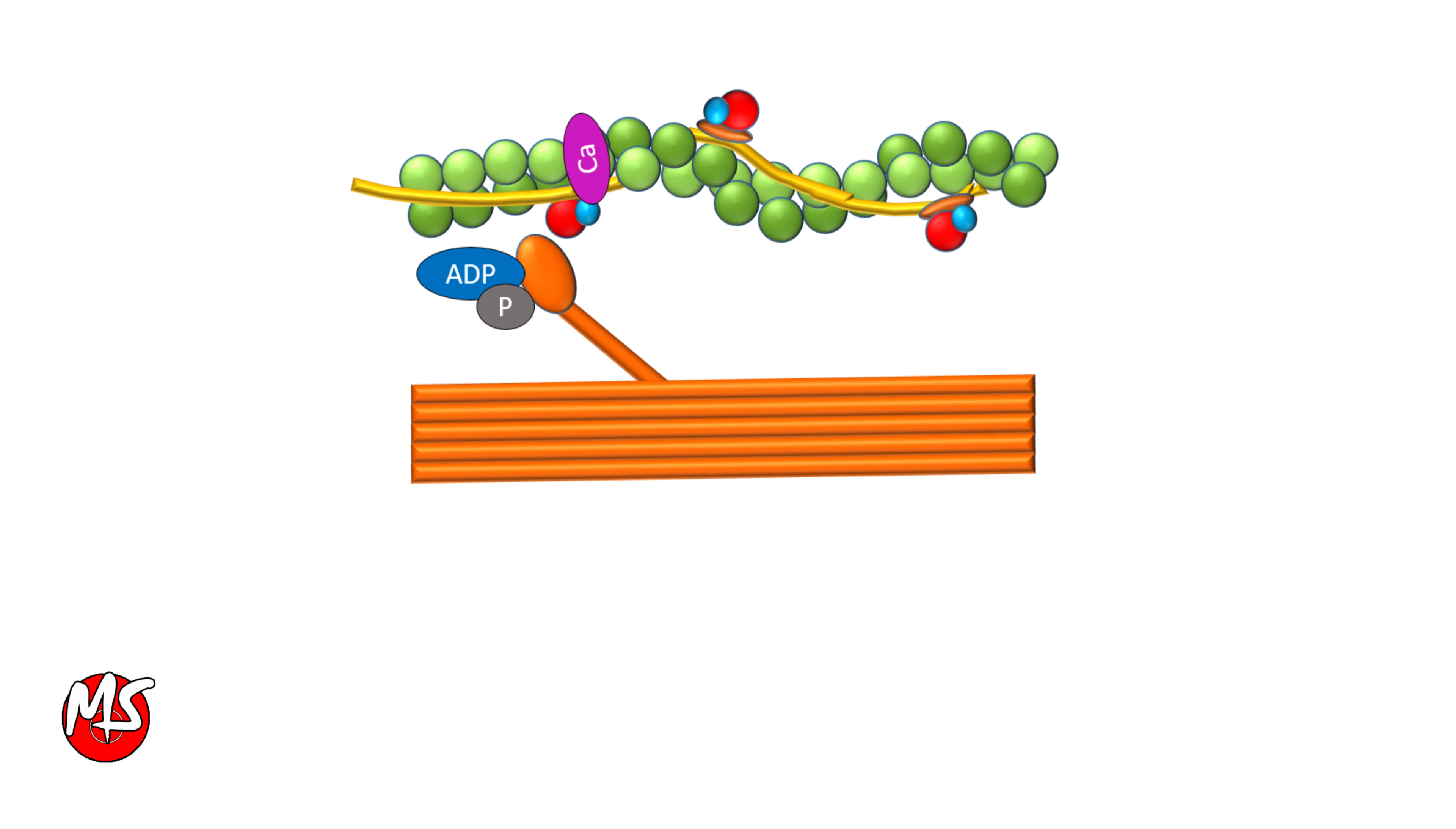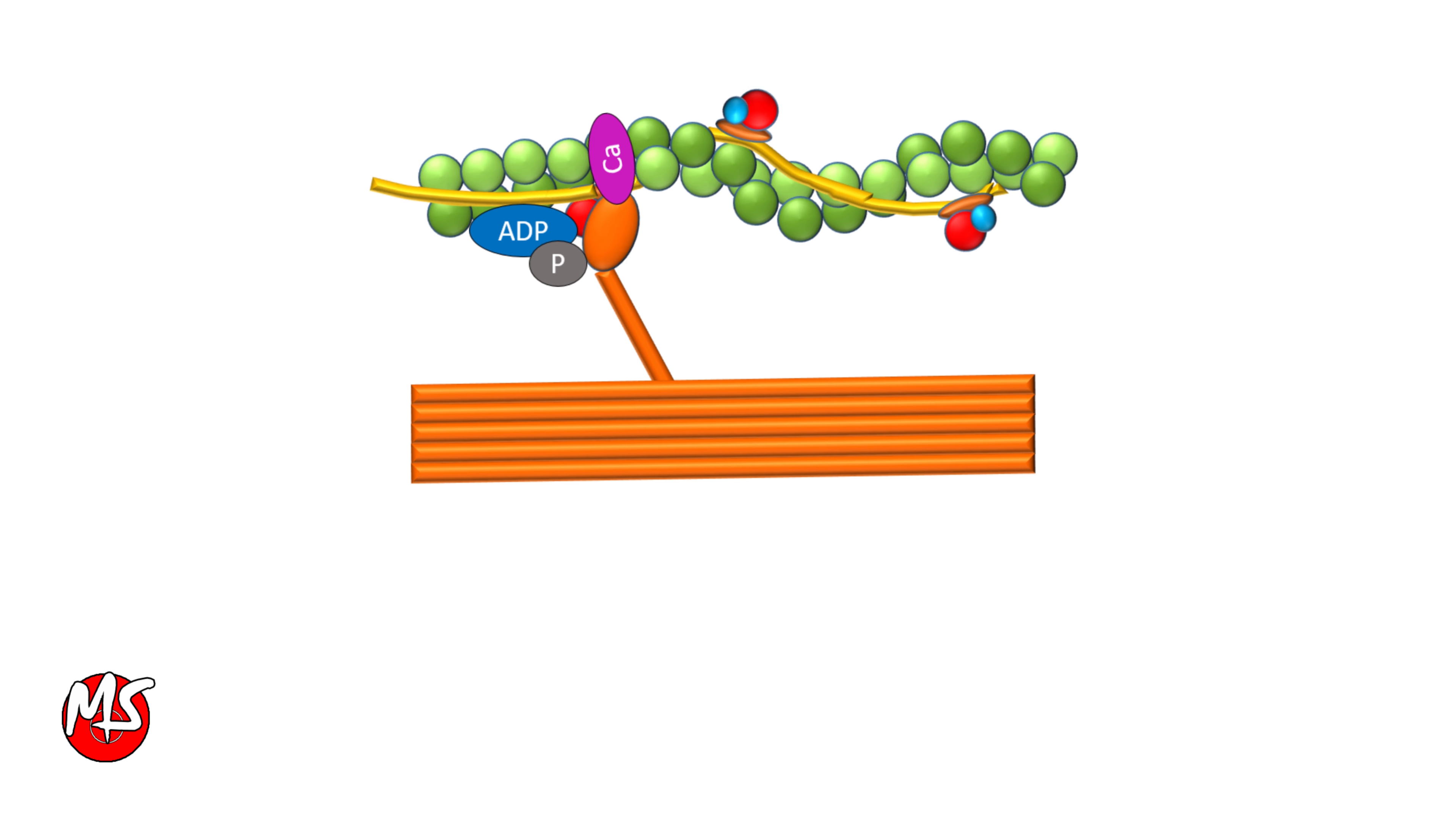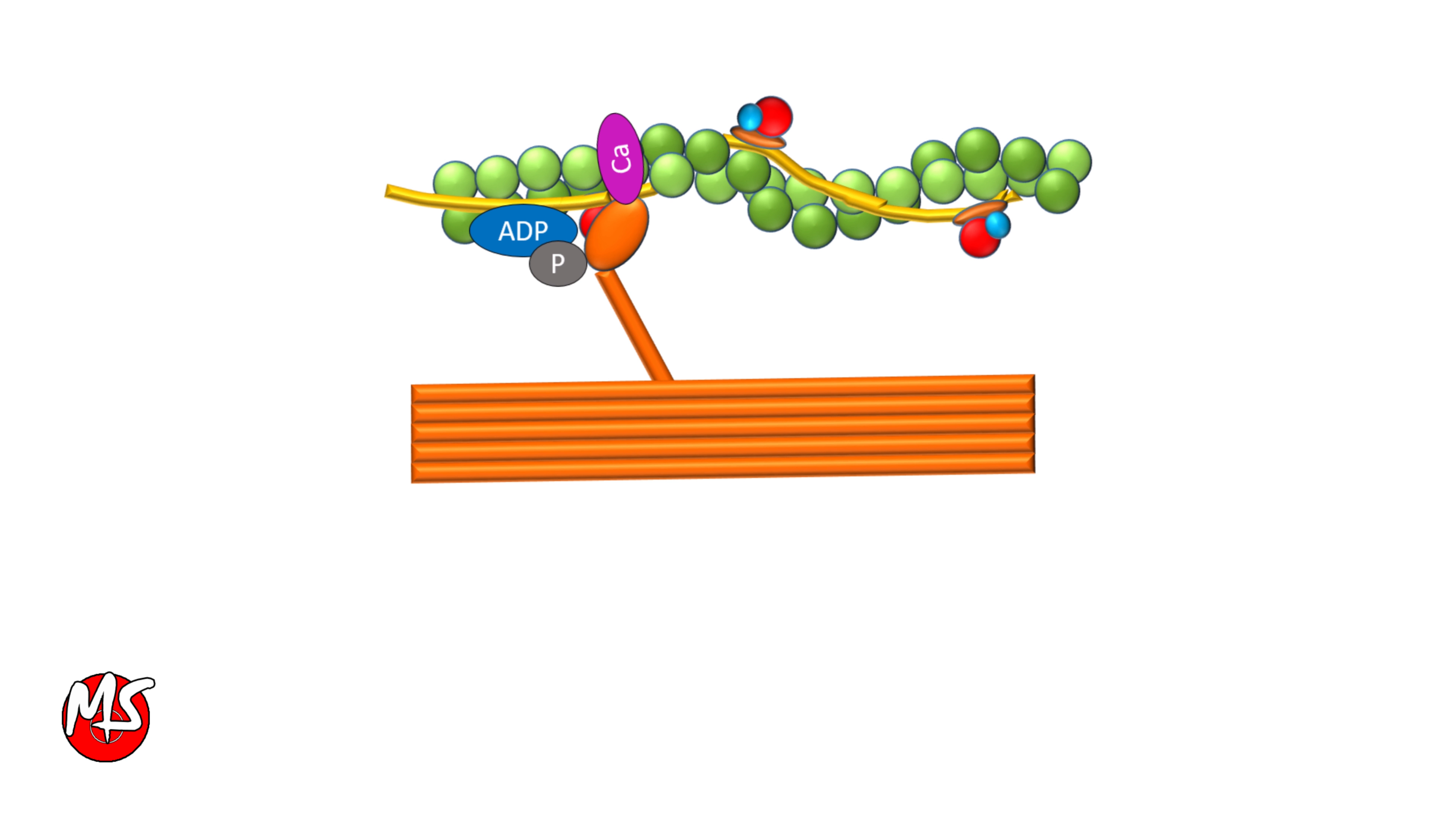The already energized myosin head attaches to actin, thus forming cross-bridges. Then the myosin head moves towards the center of the myosin molecule by utilizing the energy released from ADP and inorganic phosphate split. This action is called the power stroke.